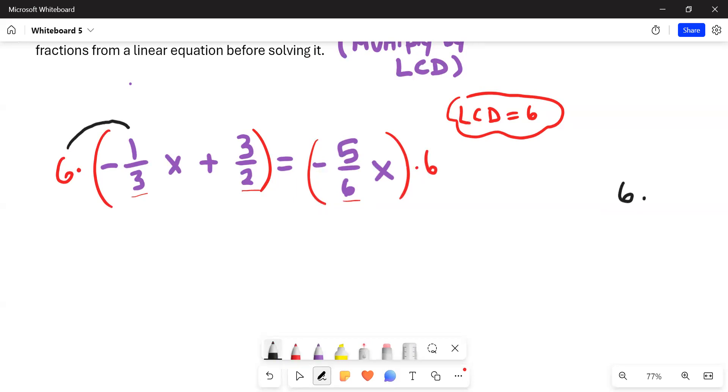Six times negative one-third, make six a fraction. You get negative six over three, and three goes exactly into six two times. The reason you're clearing a fraction using the LCD is the number will evenly divide into it. So we're left there with negative two x.